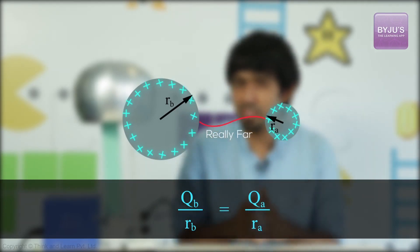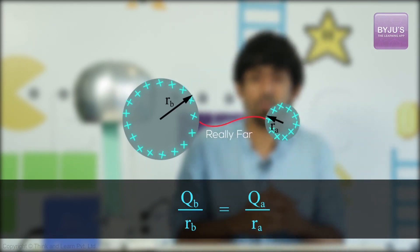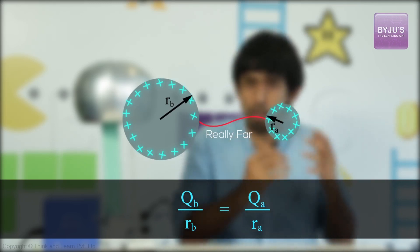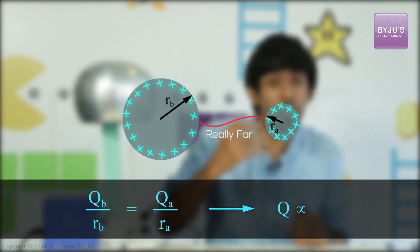But, that's not the question we asked. We don't care about the charge. We care about the charge density, the surface charge density. Now, for that, we have QB by Rb equals QA by Ra. Basically, this means the amount of charge on a ball is proportional to the radius, which is not surprising. The more the radius, the more the charge.